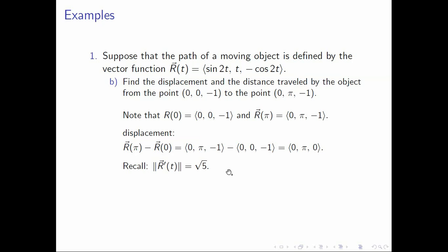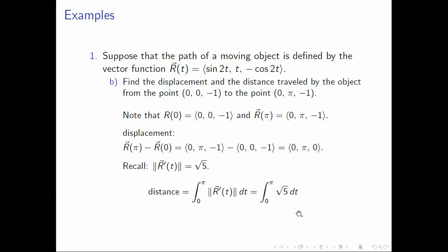We got this from the previous sub-item. Hence, the distance traveled by the object from t equals 0 to t equals π is given by this integral, which simplifies since the magnitude of r prime is square root of 5. Integrating a constant gives square root of 5 times π.